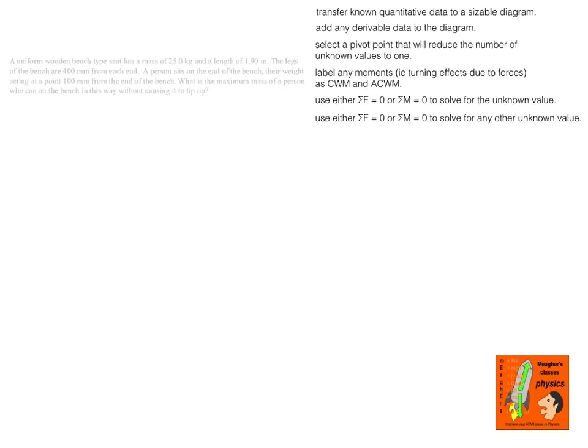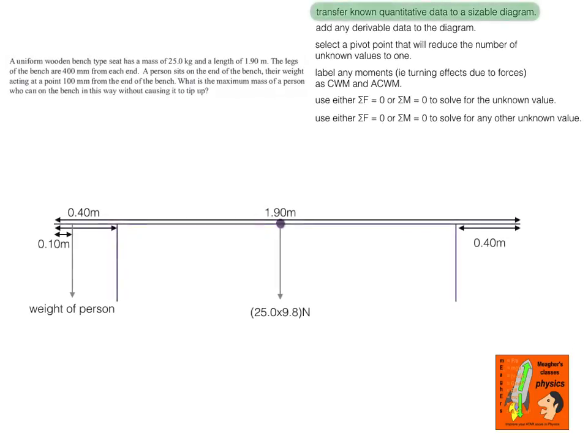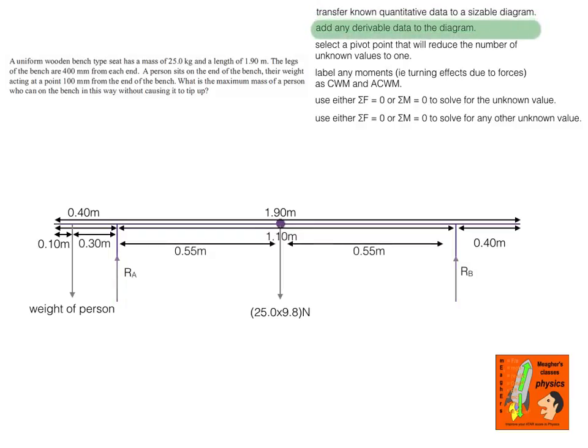I'm going to start with a pretty simple one. It's a bench with legs where they tell you where the legs are. It tells you it's a uniform bench so you know the centre of mass is at the geometric centre of the object, and it's asking what weight a person can be if they sit 0.1 of a metre from the end of the bench — what weight can they be before the bench starts to tip? I've put all the data from the question into my diagram, and now I'm going to add some derivable data: the distance from the centre of mass to each of the legs.